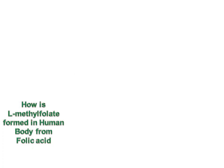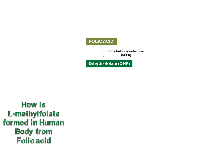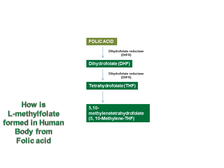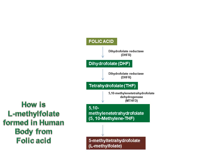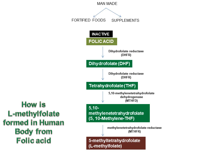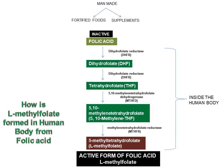How is L-methylfolate formed in the human body? Folic acid is converted to dihydrofolate in the presence of the enzyme dihydrofolate reductase. Dihydrofolate is converted to tetrahydrofolate, also by dihydrofolate reductase. Tetrahydrofolate is converted to 5,10-methylenetetrahydrofolate by the enzyme 5,10-methylenetetrahydrofolate dehydrogenase. Finally, 5,10-methylenetetrahydrofolate is converted to L-methylfolate by the enzyme MTHFR. So inactive folic acid from fortified foods or supplements is converted inside the human body to active L-methylfolate.